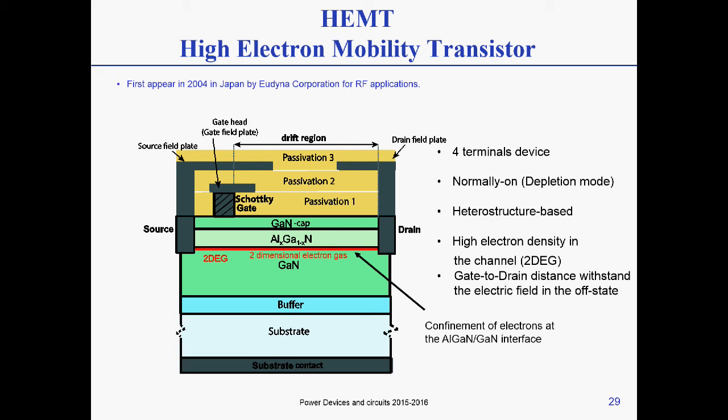This is a cross-section — a very general one. Depending on where your high electric field is, you would design a proper structure with properly designed field plates. What is important to know is that this is the main structure you start from. It is a four-terminal device: you have source and drain, which are ohmic contacts, a substrate contact, and a Schottky gate.